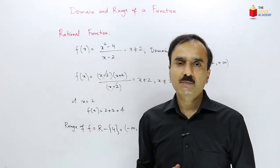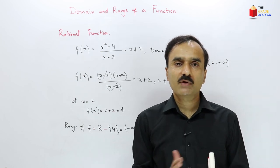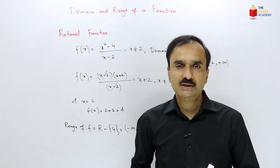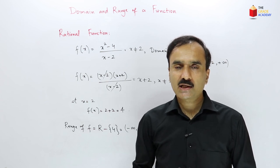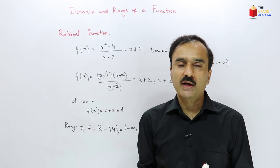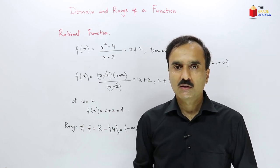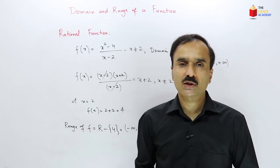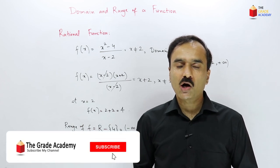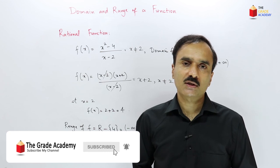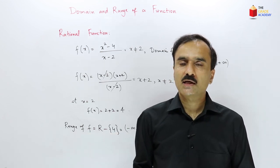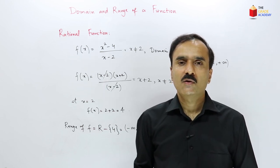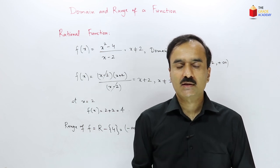In today's lecture, we saw that a function is a relation between two variables x and y represented by an equation where each x has exactly one corresponding y. The set of all x values — all inputs — is called the domain of the function, and the set of all outputs — y values — is called the range. In the next lecture, we will discuss various types of functions. See you next time.